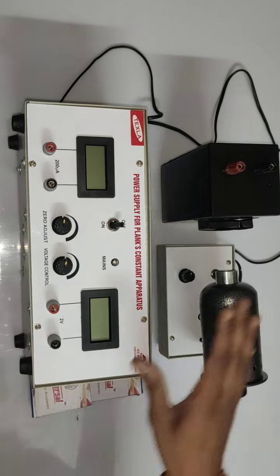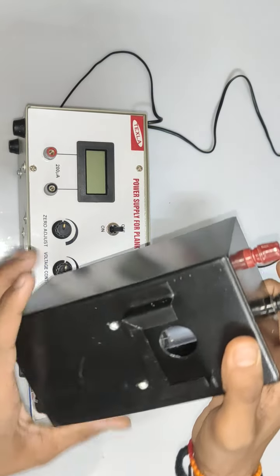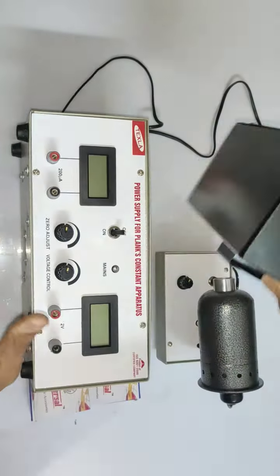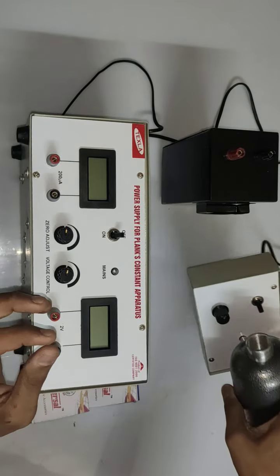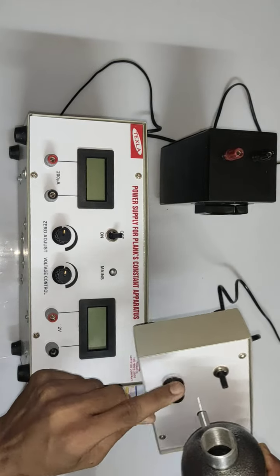Planck's constant apparatus consists of a photocell, vacuum-type photocell, with two terminals provided: red and black for positive and negative. The source has a variable part so you can vary the intensity. A 60-watt bulb is already inside the source.